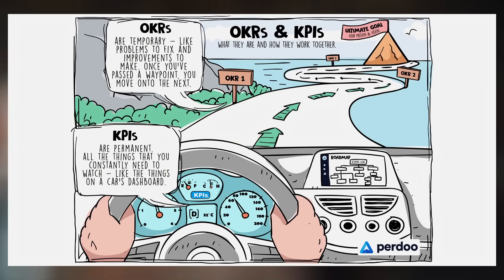OKRs and KPIs work well together. Let's imagine your organization is a car and you're driving that car towards a destination. Your KPIs are what you'll find on your car's dashboard, such as the fuel gauge and the engine temperature gauge — things you constantly need to watch to ensure your engine isn't overheating and you're not running out of gas. On the other hand, your OKRs are like your roadmap that guides you towards your destination. These are temporary goals that will change from time to time — once you've passed a landmark, you'll focus on the next one.